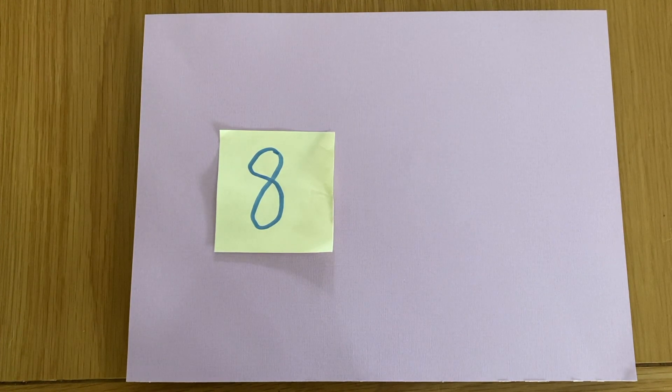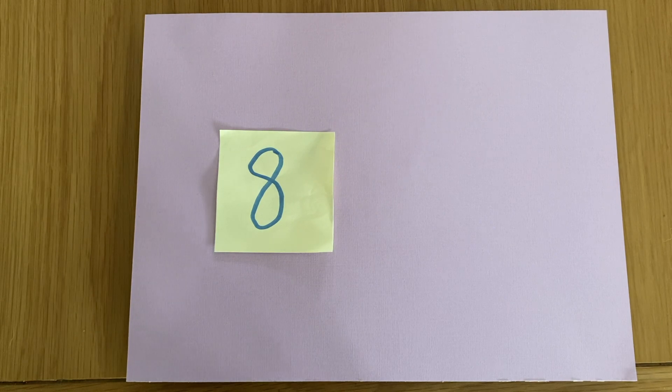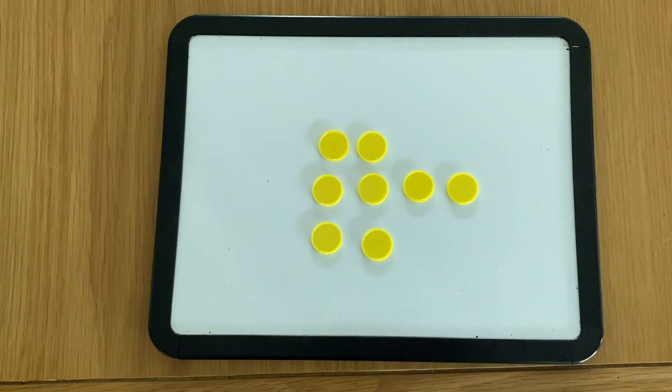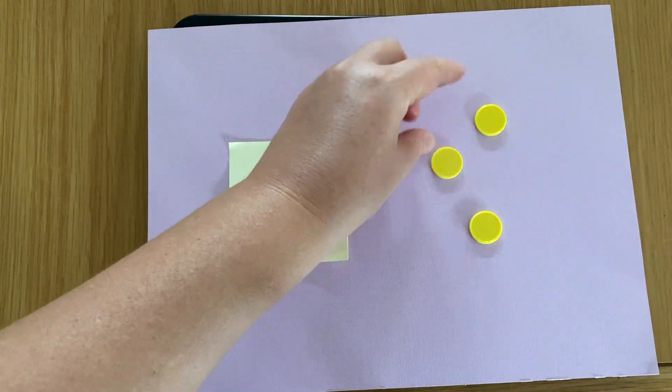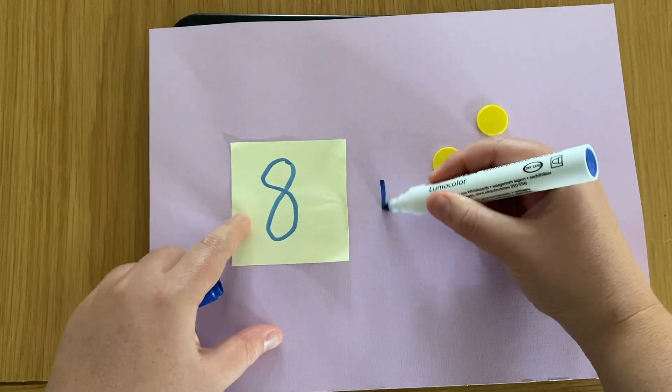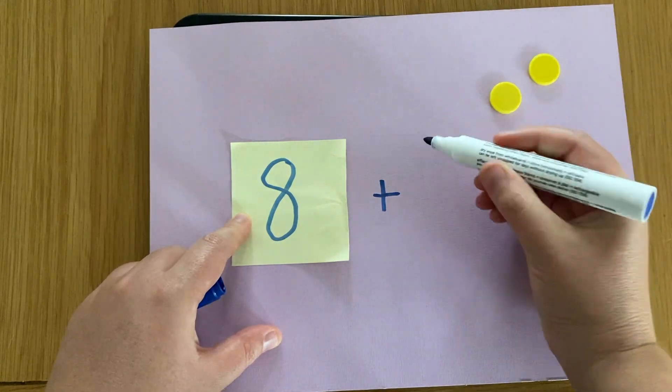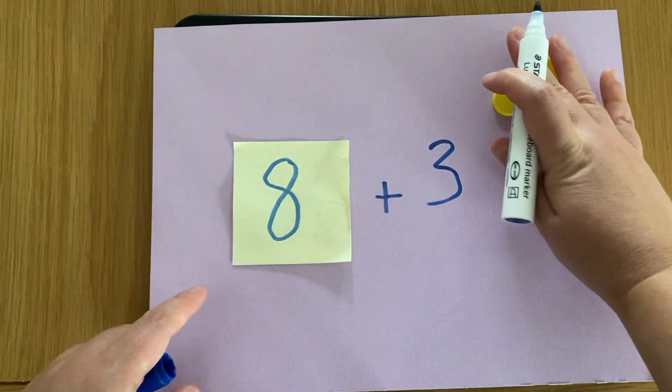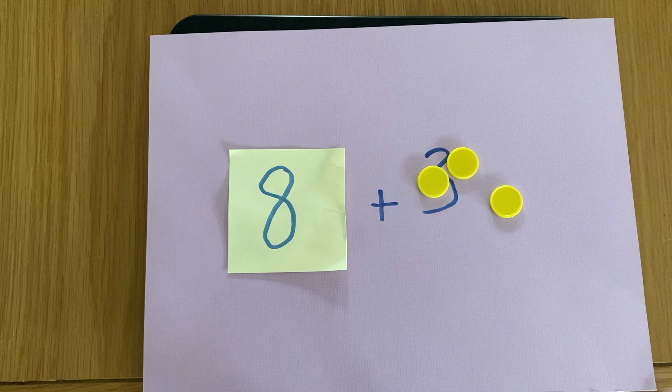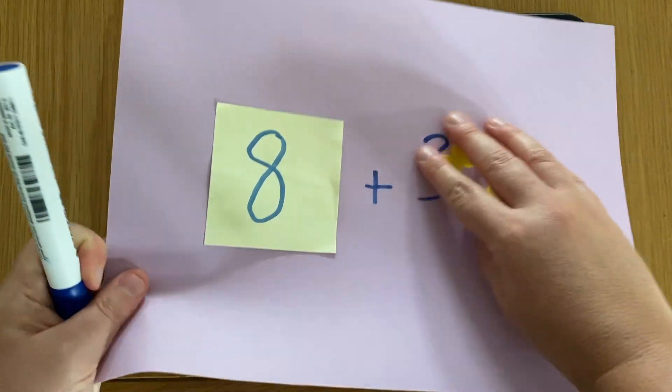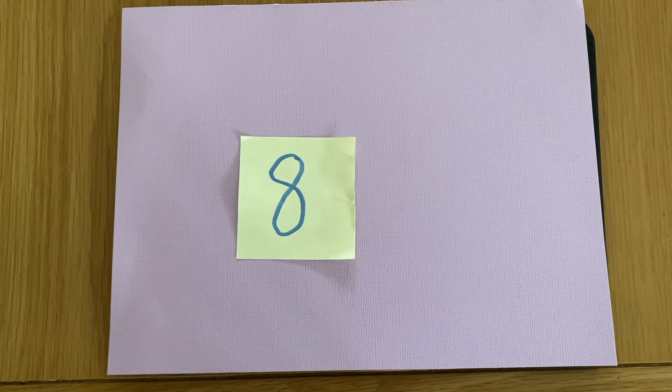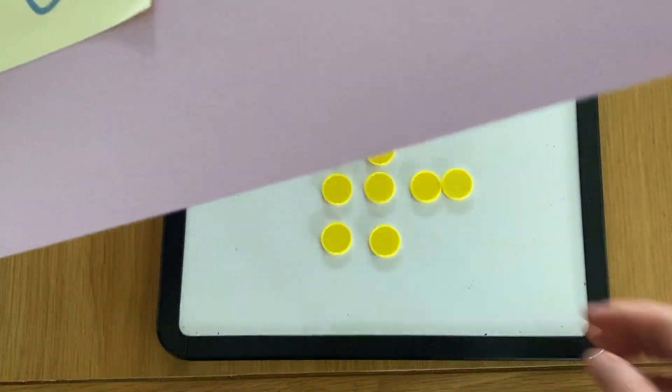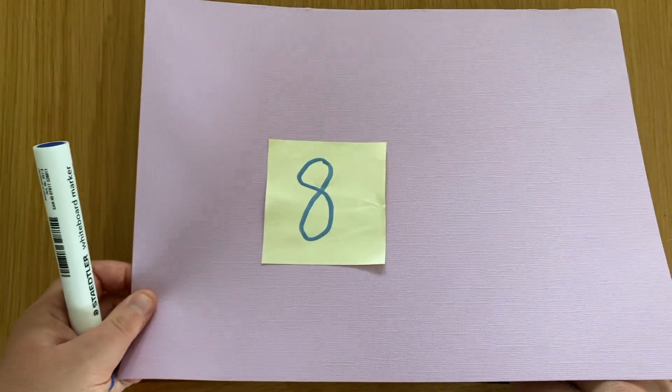And what that looks like is I will tell students that underneath we have eight counters and I want to add three more. And I might write this as a number sentence or I might just keep the counters there, and what this does is it allows me to use the counters and the concrete materials as much as the students need to. Or I can tell students that there are eight counters underneath and that I am taking three away.